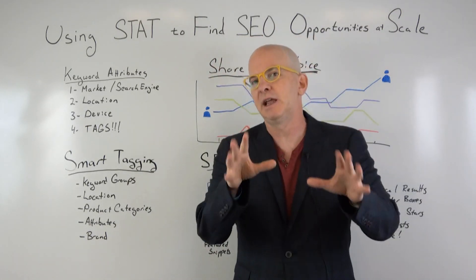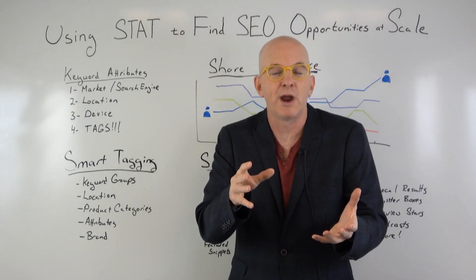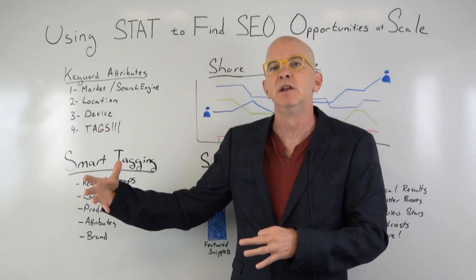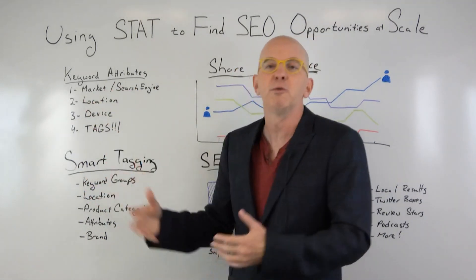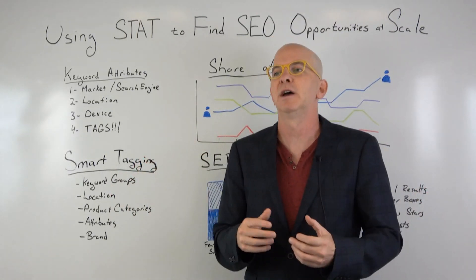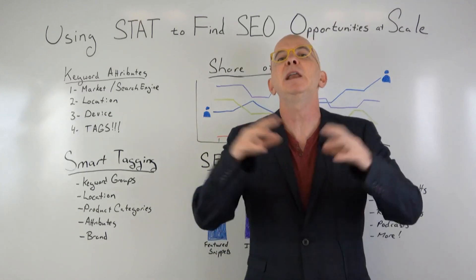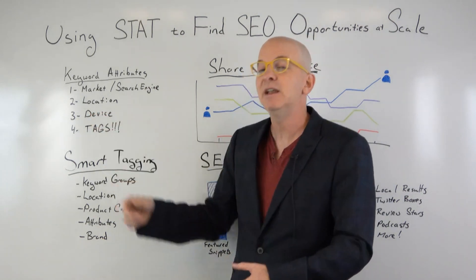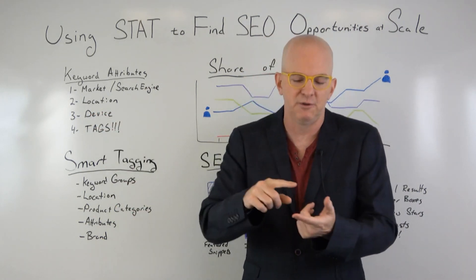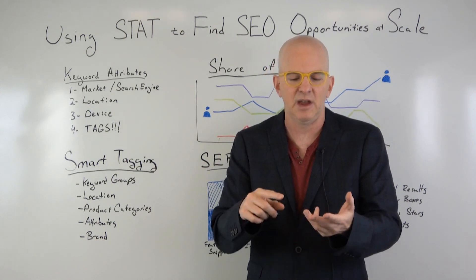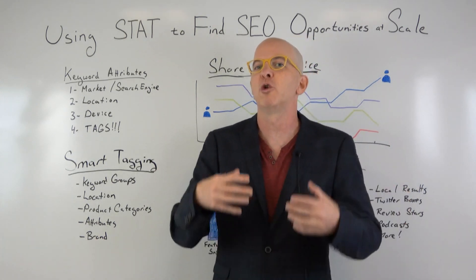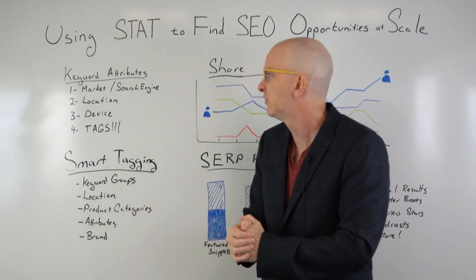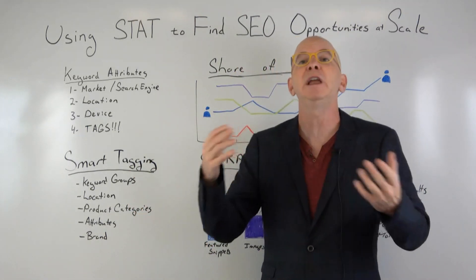Like a lot of keyword rank trackers, you start with keywords, but one of the differences is all the different attributes you can assign to each keyword. First is the market or search engine — so you can get Canadian English results, Canadian French results, or virtually any market in the world available in STAT. The second is location, which is a slightly different concept. You can define zip codes, cities, be as specific as you want. This is very important for multiple-location businesses or if you're running an advertising campaign in a certain part of the country and want to track very specific results.